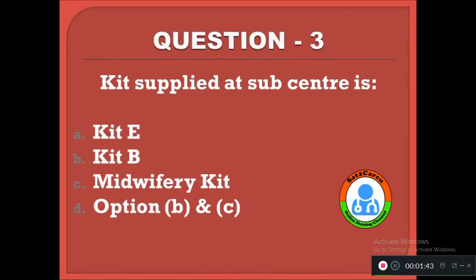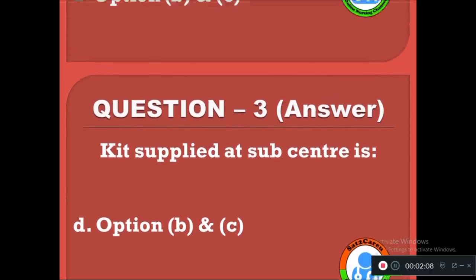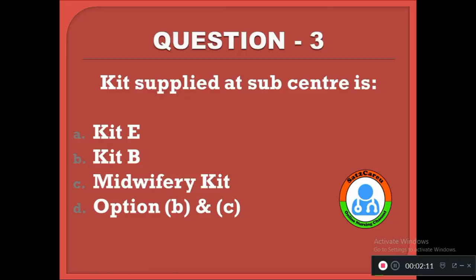Question 3: Kit supplied at a sub-center is — option A: kit E type, B: kit B type, C: midwifery kit, D: option B and C. The correct answer is D, option B and C. In sub-centers, kit B and midwifery kit are provided, along with kit A as well.